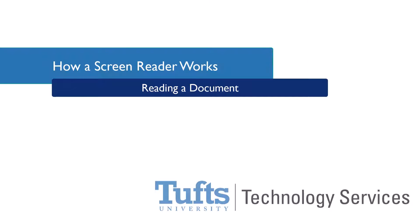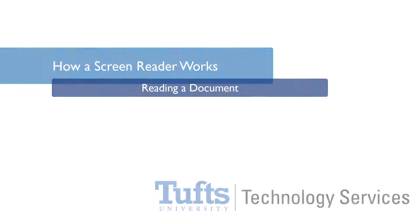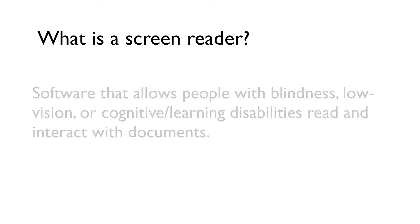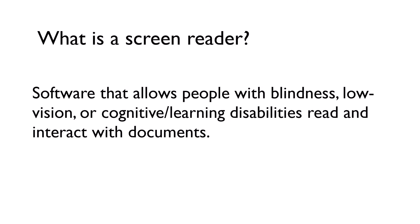When we think about digital accessibility and making our documents accessible to people with disabilities, that often means making sure that our content is designed to be compatible with the various types of assistive technology that people may be using. Screen reading software helps people who are blind or who have limited or low vision read and interact with documents. Screen readers are also frequently used by people with certain cognitive or learning disabilities as a reading and learning aid.